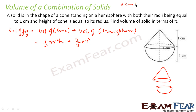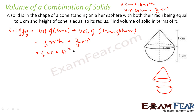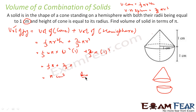Now we will put the values. Volume of cone is (1/3)π × r² × h = (1/3)π × 1² × 1, and volume of hemisphere is (2/3)π × 1³. So we get (1/3)π + (2/3)π, which gives us 1π or π. Since r = 1 centimeter and we're talking about volume, it will be π cm³. So the volume is π cm³.